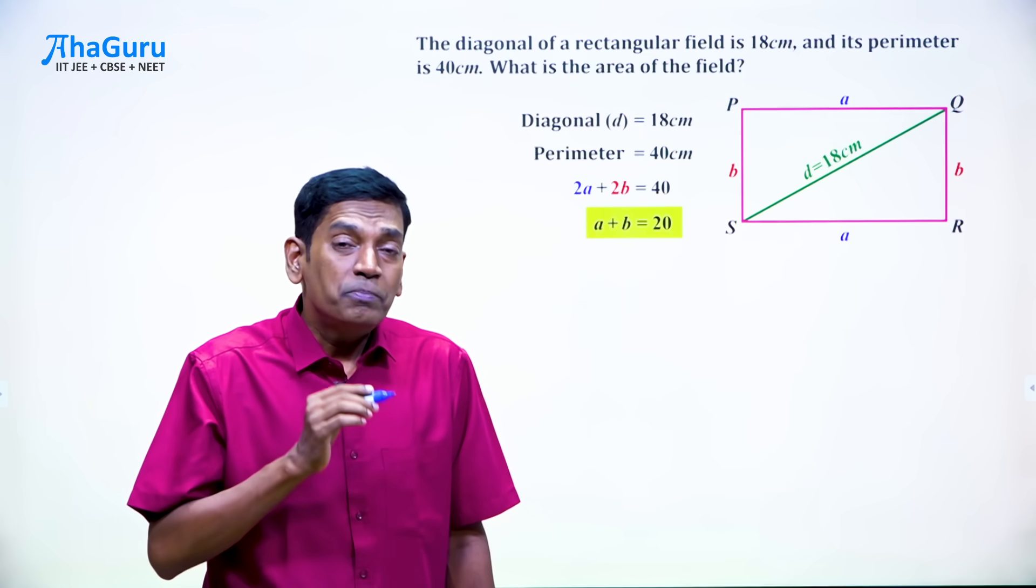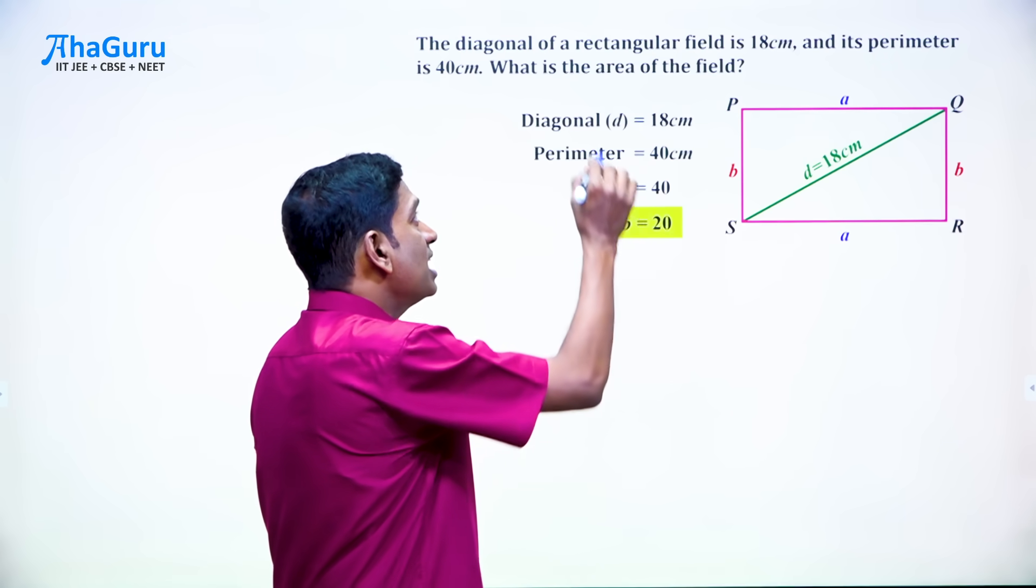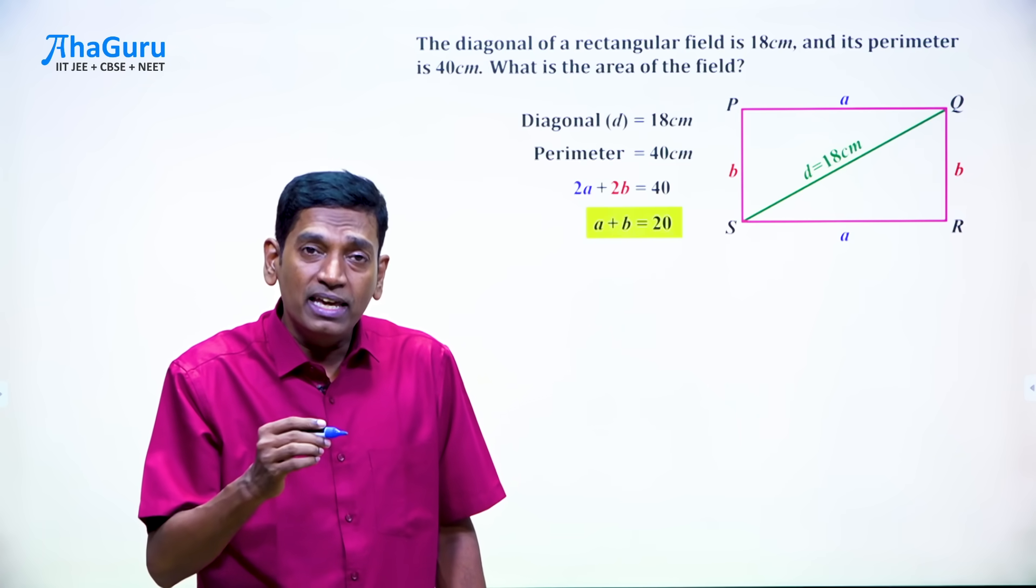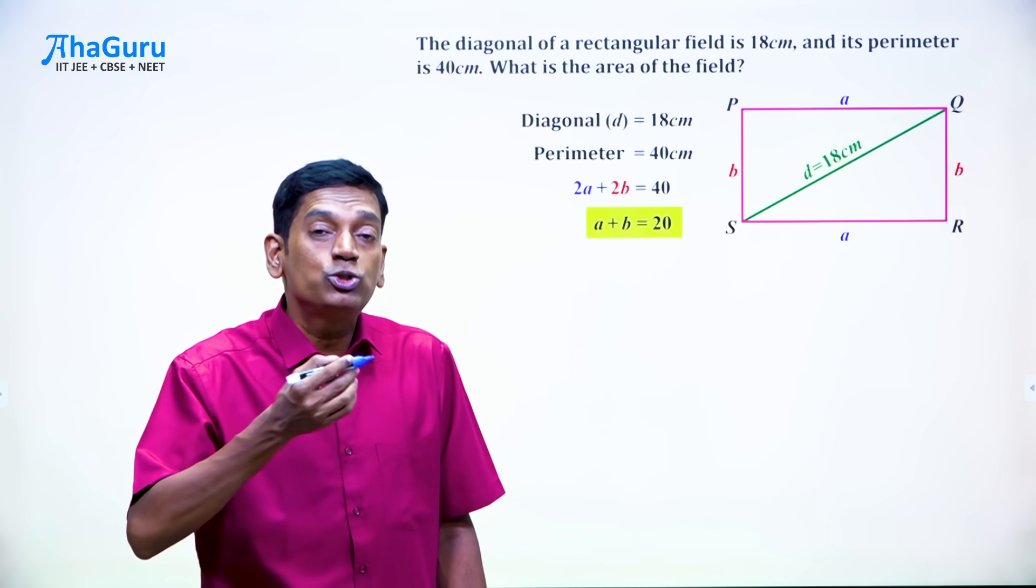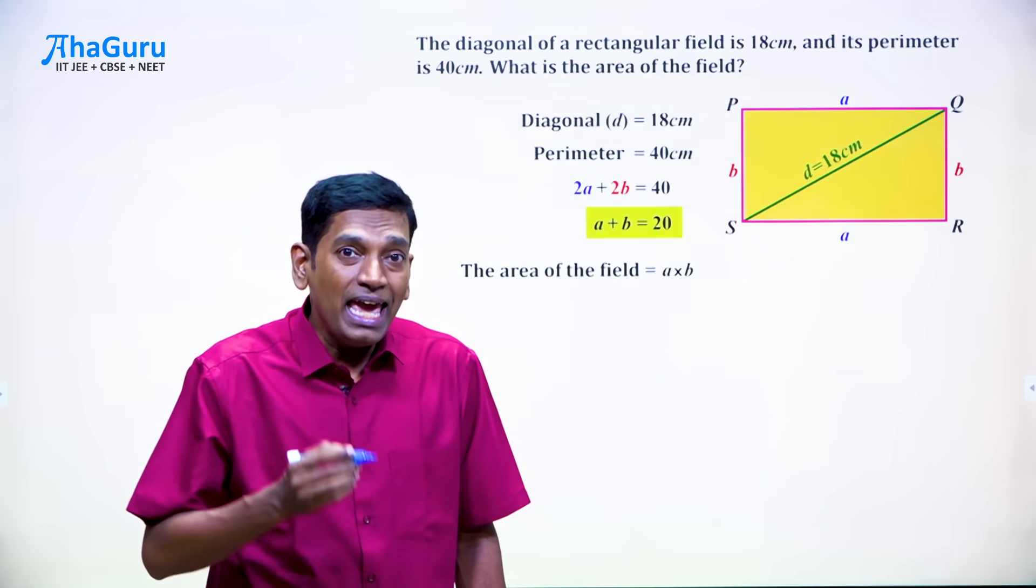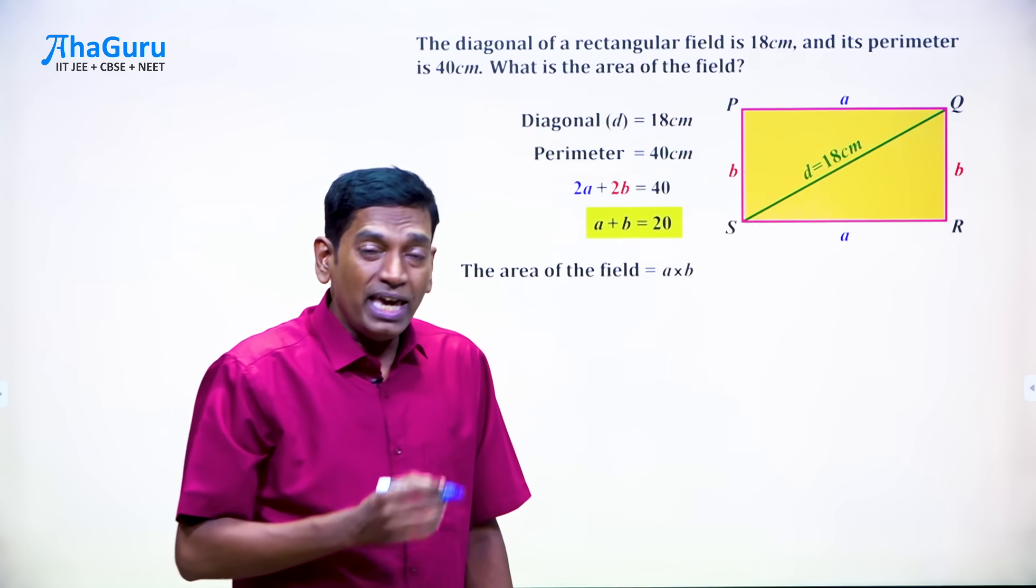Is that all? But that's not what is asked. What is asked is the area of the field. Remember, to find the area, you need length into breadth. In fact, the formula for area is A into B.